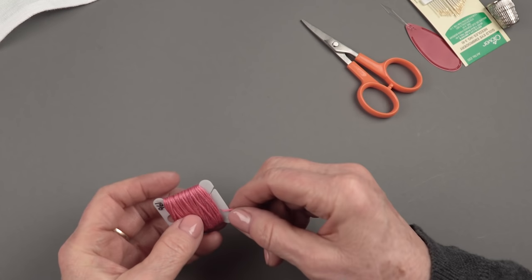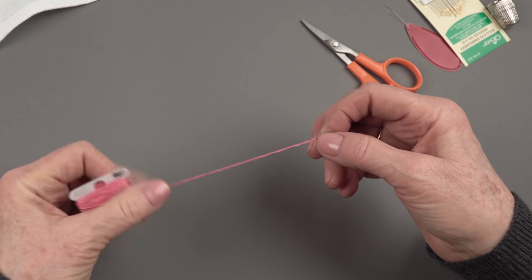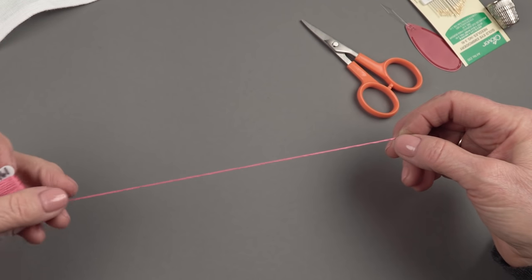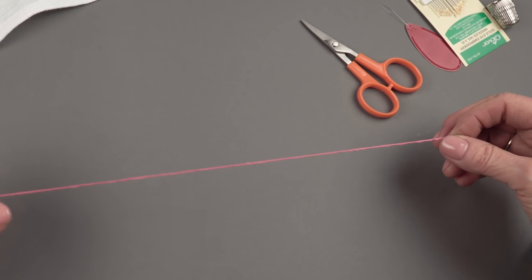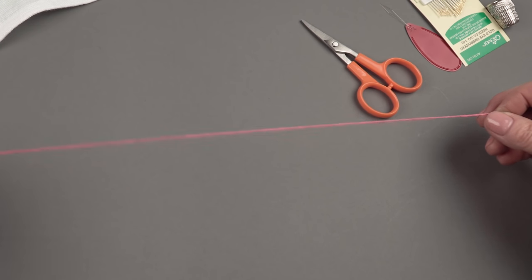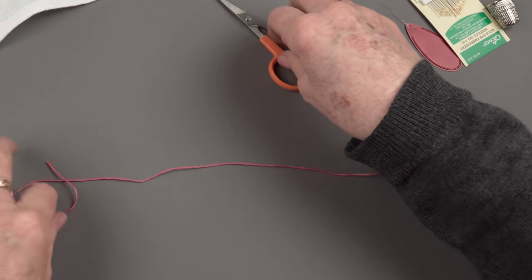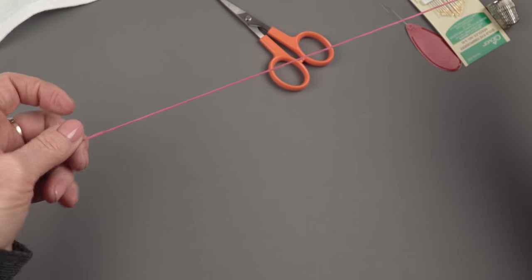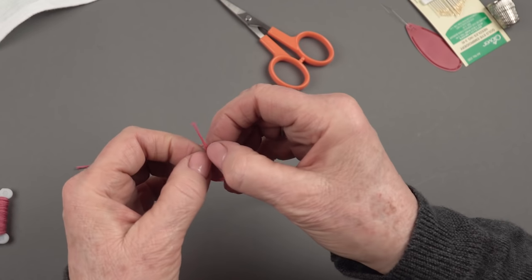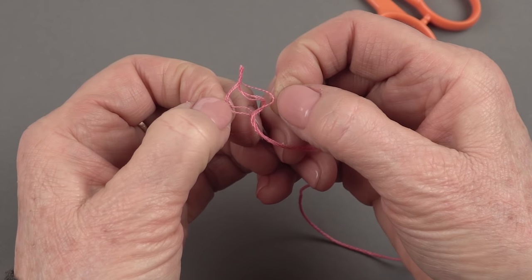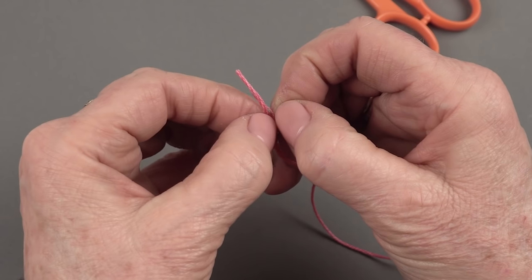The other thing you might want to know is that when you're using the floss, you want to work with only 18 inches at a time, approximately 18. It doesn't have to be hard and fast. If you get too much, then it's hard to separate the strands. I'm just guessing that's about 18 inches. You can see that the floss comes in six strands. You can see that there are six there.